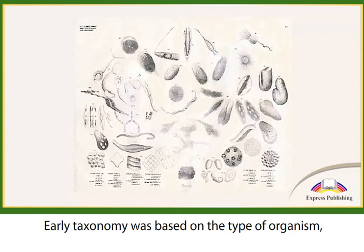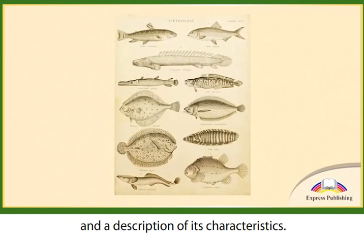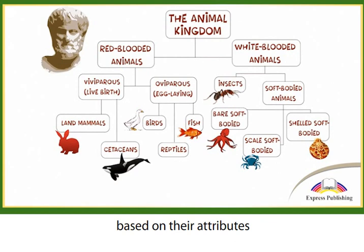Early taxonomy was based on the type of organism — a plant, an animal, a bird, or a fish — and a description of its characteristics. Aristotle began to classify living organisms based on their attributes, such as giving birth to live young, laying eggs, and having blood or not having blood.